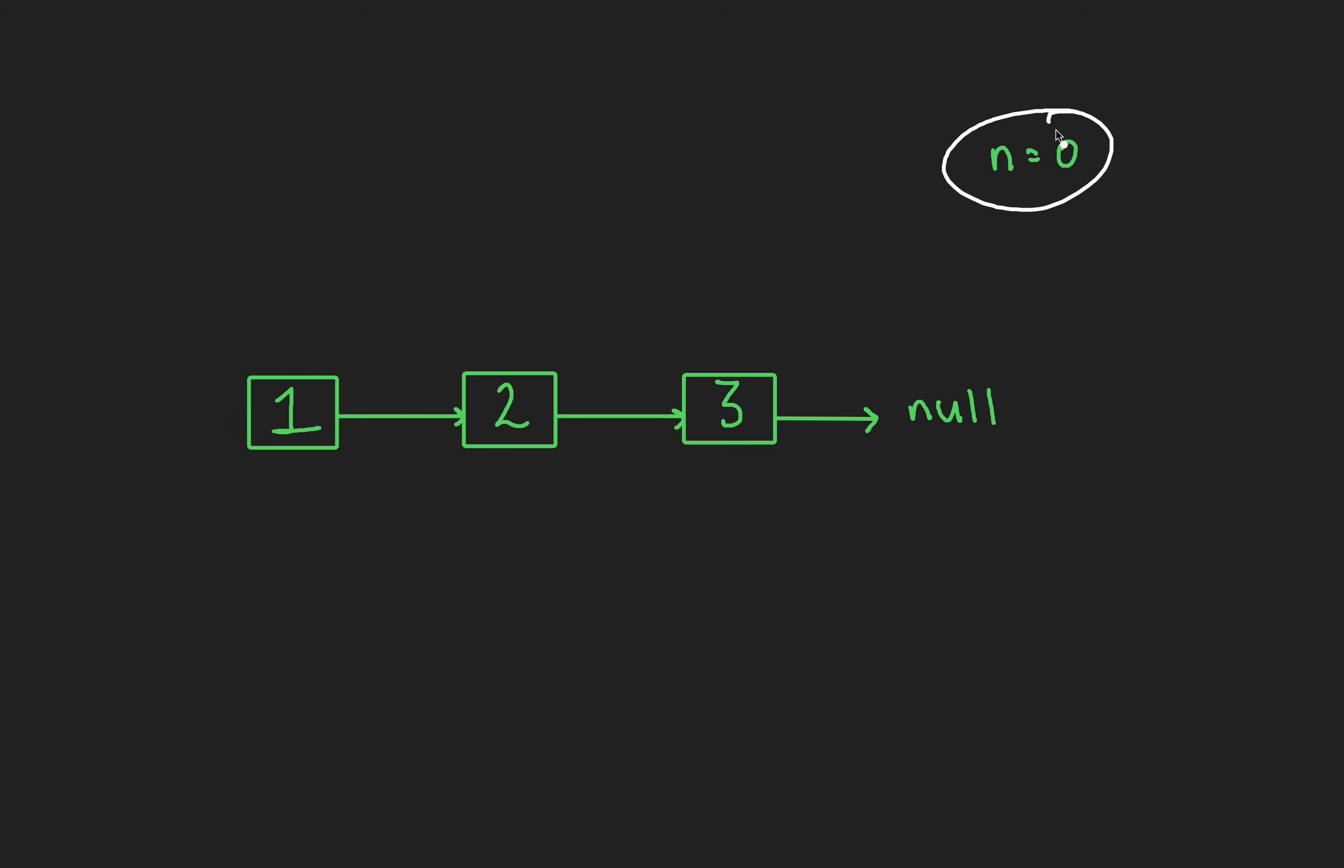Alright, we have an n of 0, so let's initialize a pointer called i, and iterate this 0 times, and realize we can't delete this node. This is the same pitfall in the original LeetCode problem, we're off by 1. It's easily forgettable, but indices start at 0. One thing's for certain, we need to bring back our ever so convenient and all purpose, dummy pointer.